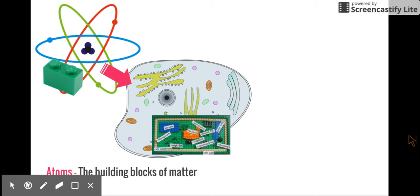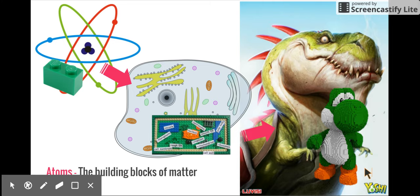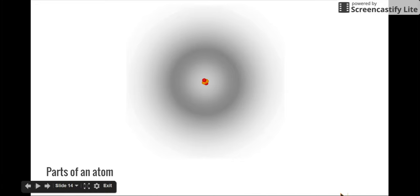Just like Legos, atoms can be put together to build bigger things. Atoms build things like cells — when you study biology, you learn about cells and molecules, which are made of atoms. Rocks, water, everything is made of atoms. Put enough cells together and you make bigger things like creatures, rocks, or water. Atoms are the fundamental building blocks of matter — put enough together and you get something big.